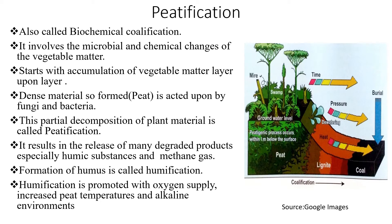Vegetable matter — the trees, the plants — falls and starts decomposing, accumulating layer upon layer. The material so formed is called peat, which is acted upon by fungi and bacteria. This partial decomposition of plant material is called peatification, and it results in the release of many degraded products, especially humic substances and methane gas. Formation of humus is called humification, which is part of peatification. Humification is promoted with oxygen supply, increased peat temperature, and alkaline environments.